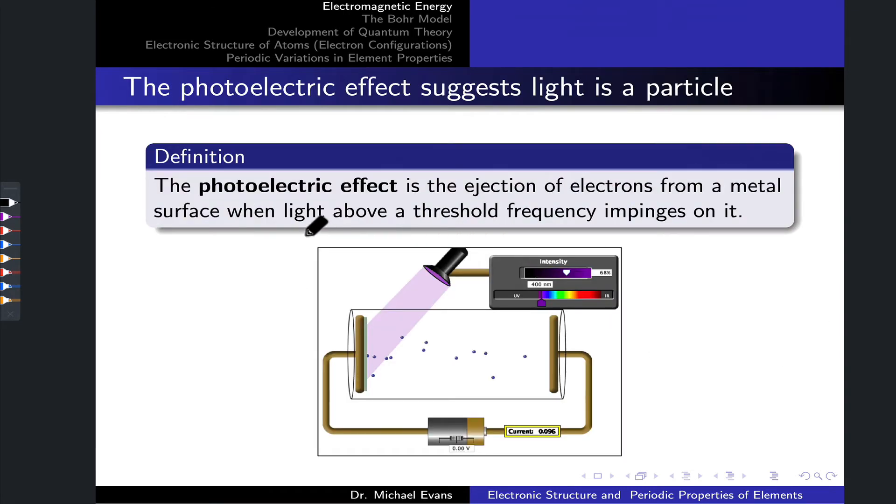Let's look at a couple more examples that suggest light has particulate nature. The first was a phenomenon first explained by Einstein, and this was really what gave rise to the concept of a photon, called the photoelectric effect. The photoelectric effect is the ejection of electrons from a metal surface when light above a certain threshold frequency impinges on the metal surface. In terms of kicking electrons out of the metal, there's the sense that the light is made of particles that collide with the metal atoms and cause the ejection of electrons out of the metal.